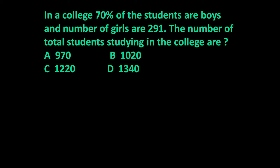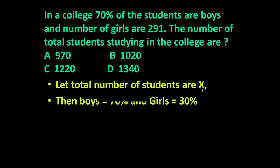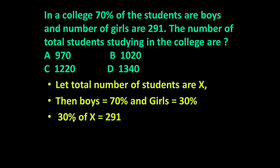To answer this question, let us assume the total number of students studying in the college is x. It is given that 70% of students are boys, so obviously the remaining 30% are girls. There are 291 girls, which means 30% of x is equal to 291.